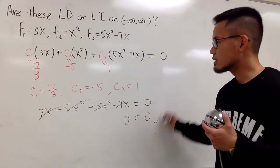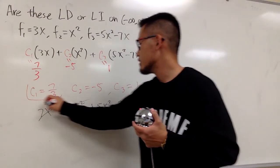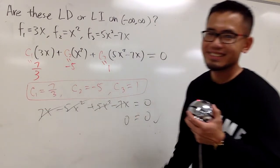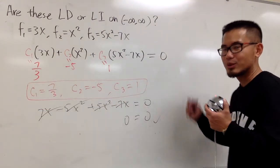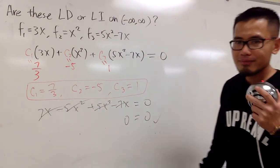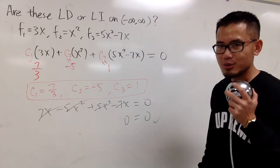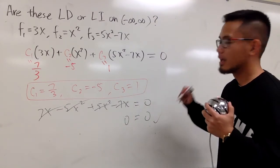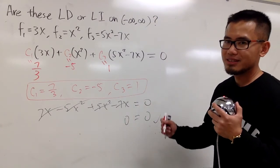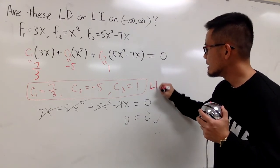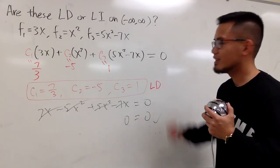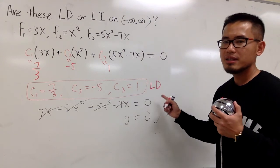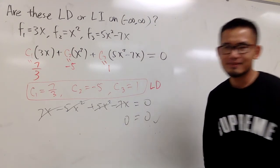Everything cancels to 0. Because you found non-trivial c values that make this equal to 0, these three functions are linearly dependent. That's it.